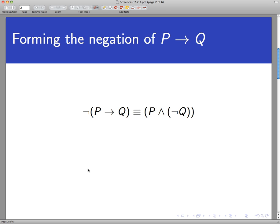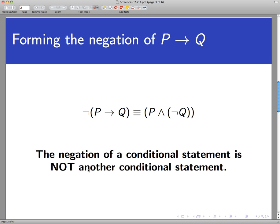To form the negation of a conditional statement, the most important thing to realize is that the negation of a conditional statement is not yet another conditional statement. That's very counterintuitive and hard to grasp sometimes. The negation of a conditional statement is actually an and statement, where we assert P but the negation of Q as well.